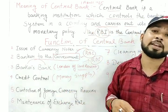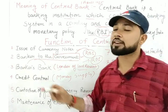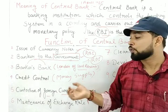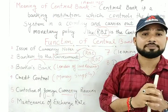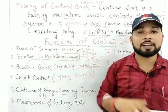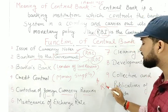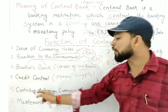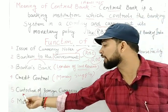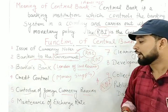The fifth function is custodian of foreign currency reserves. Custodian means the keeper or storekeeper. All foreign currency — euros, dollars, pounds — that comes into India through exports is reserved and held by RBI. So RBI is also known as the custodian of foreign currency.